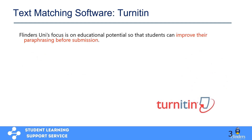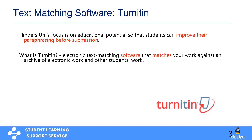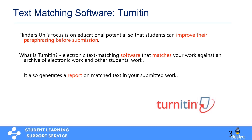Turnitin is basically a software which the university has introduced for text matching. The main focus for introducing Turnitin is so that students can improve their paraphrasing before their final submission. It's a software that allows you to submit your writing, and then it will match it against a repository or archive of other essays, writings, journal articles, books, and so on. Every time you submit your document through Turnitin, it saves that document.